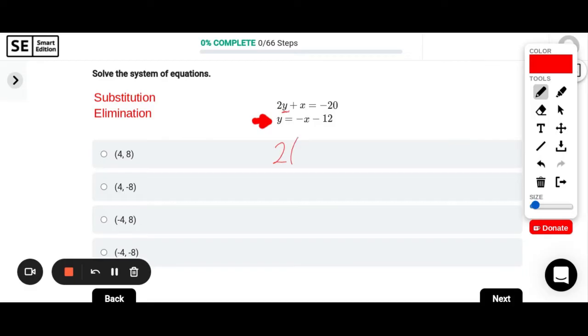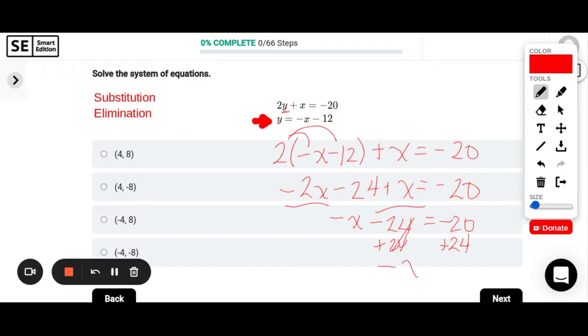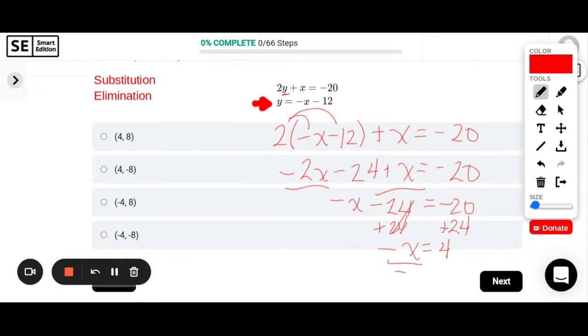So I'm going to rewrite that first equation as two times, instead of y I can rewrite that as negative x minus 12, and then plus x equals negative 20. So from here I can distribute, so I can start to work towards getting my terms combined and trying to get x by itself. So once I distribute now I can combine these two terms: negative 2x plus x is negative x minus 24 equals negative 20. And then I will add 24 to both sides. So that will cross off on the left and I'll just be left with negative x equals a positive 4. And in order to then get this by itself, divide each side by negative 1 and we get x equals negative 4.